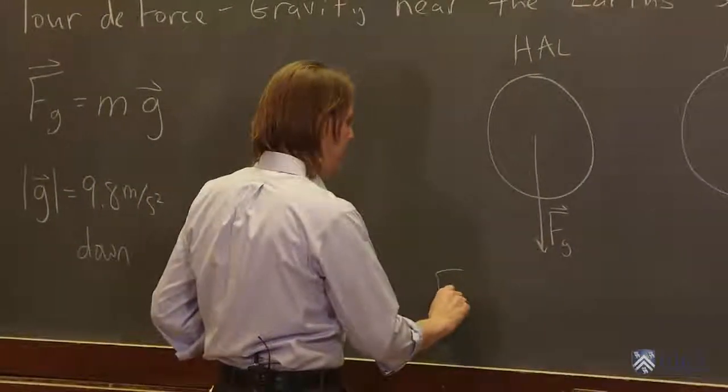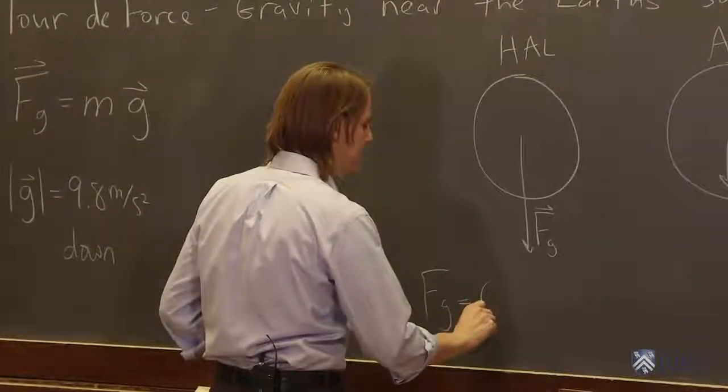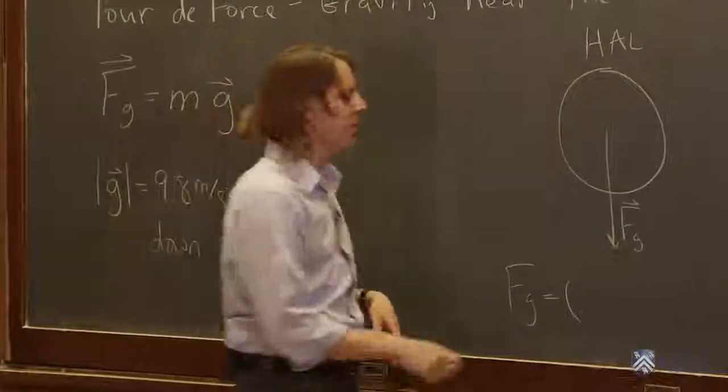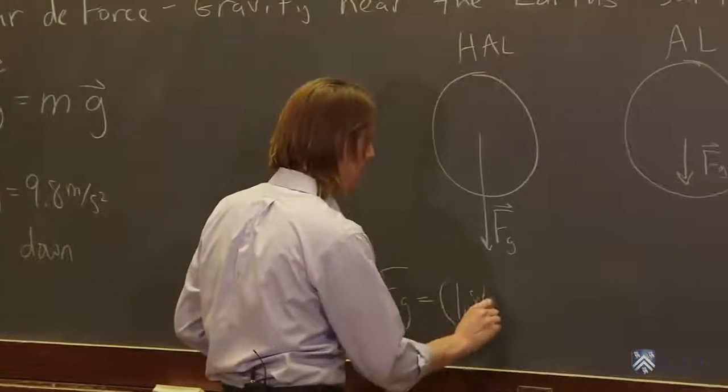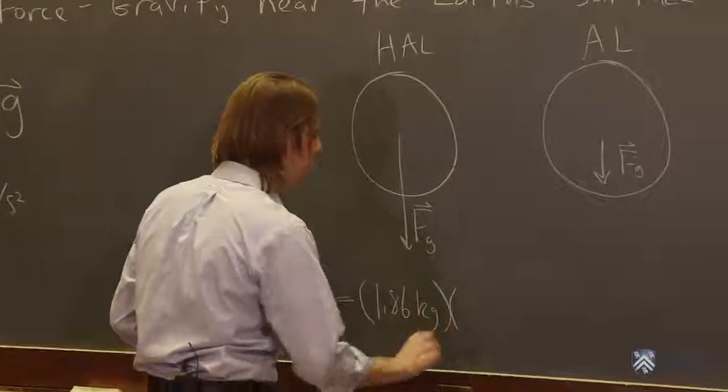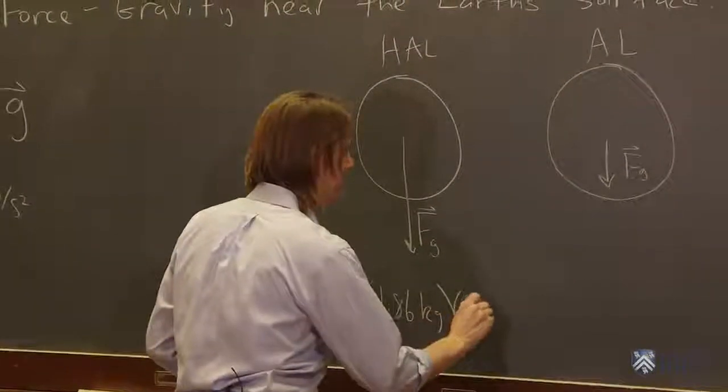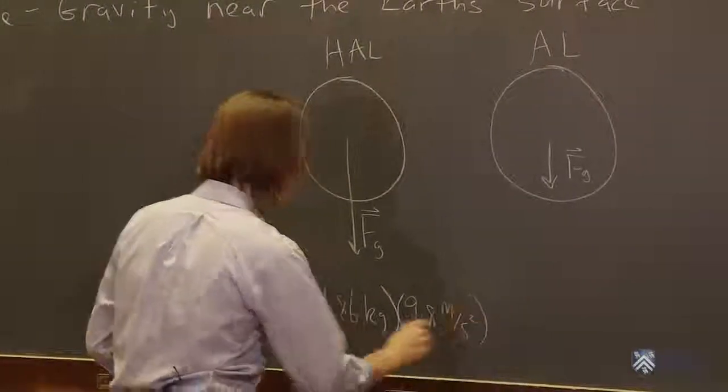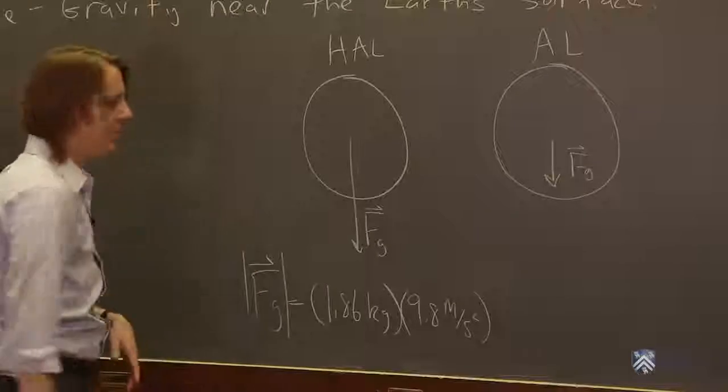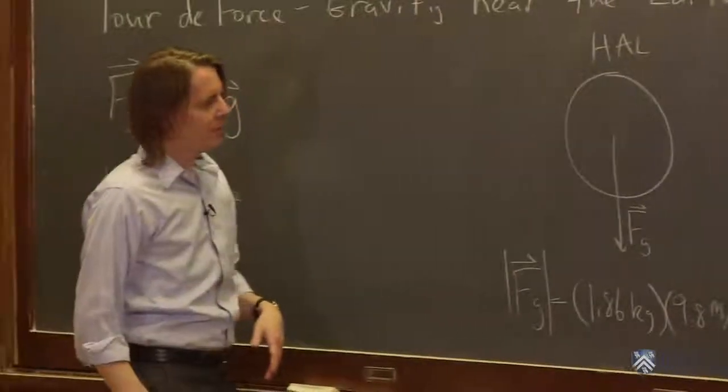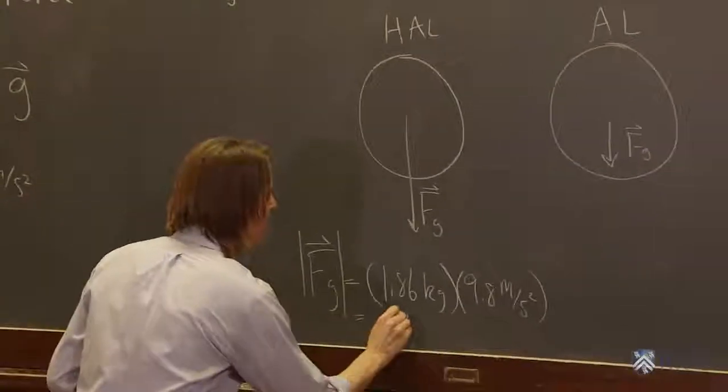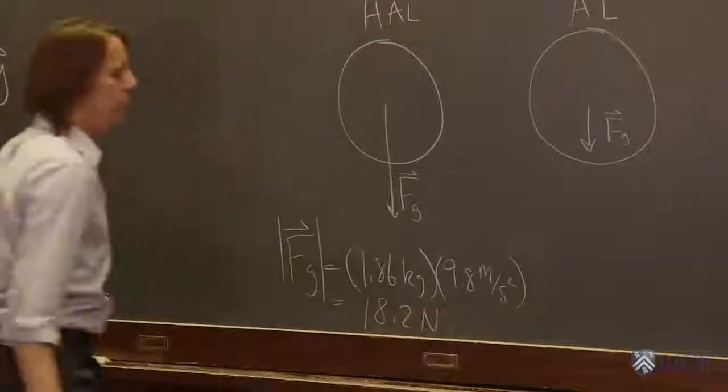So FG here is M. The mass of HAL, it's a pretty big piece of steel. It's 1.86 kilograms times 9.8 meters per second squared. And we mean the magnitude of FG. And what does that give us? It gives us 18.2 newtons.